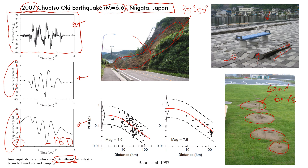What we typically need to get from this chart is the peak ground acceleration — let's call it PGA. I would estimate from the chart it's about 0.38 g's. Why do we need that?